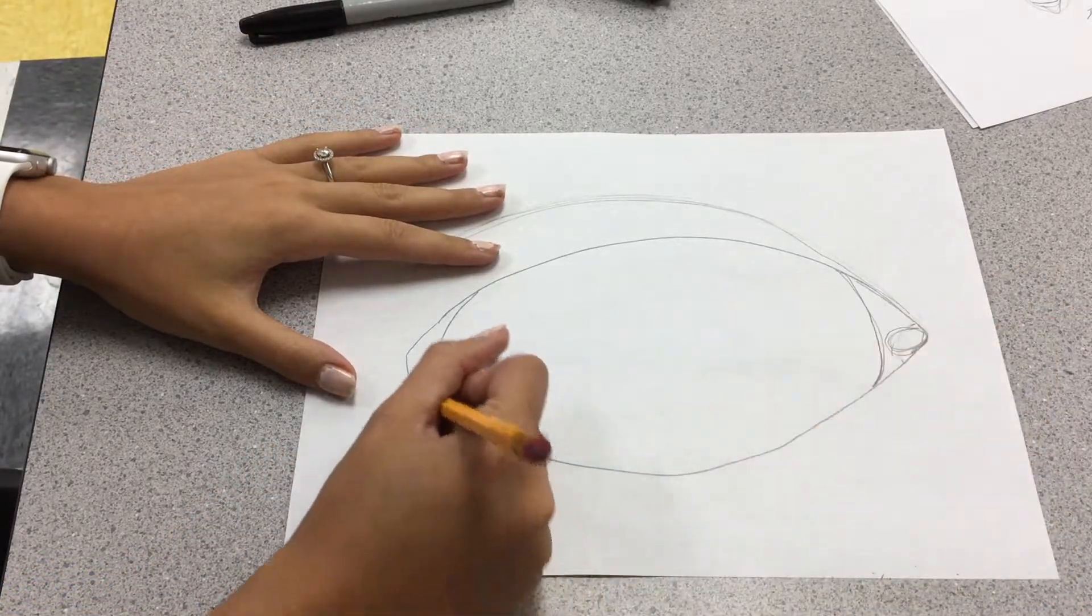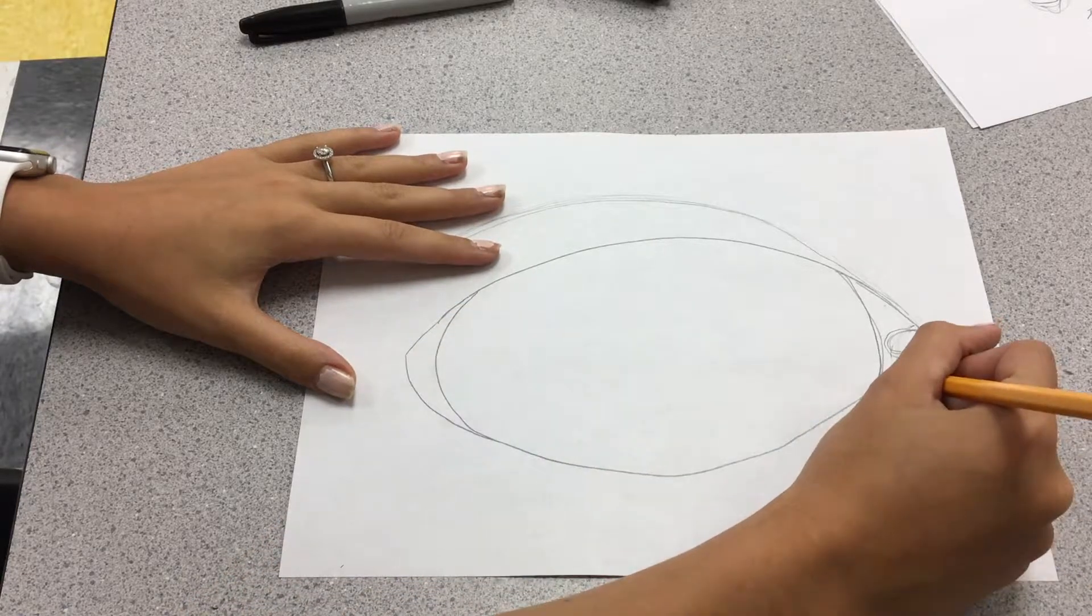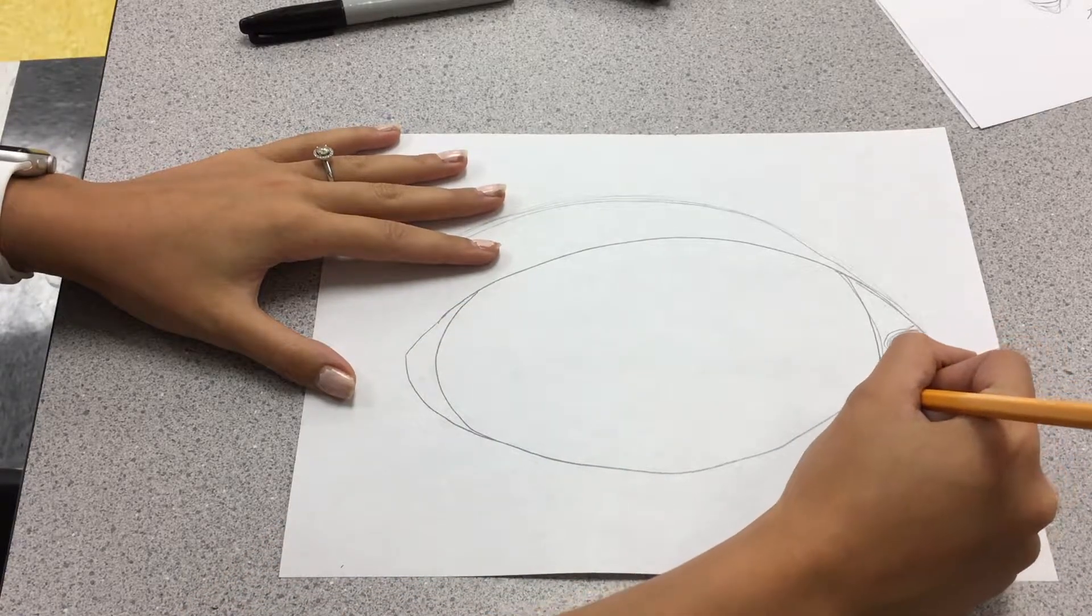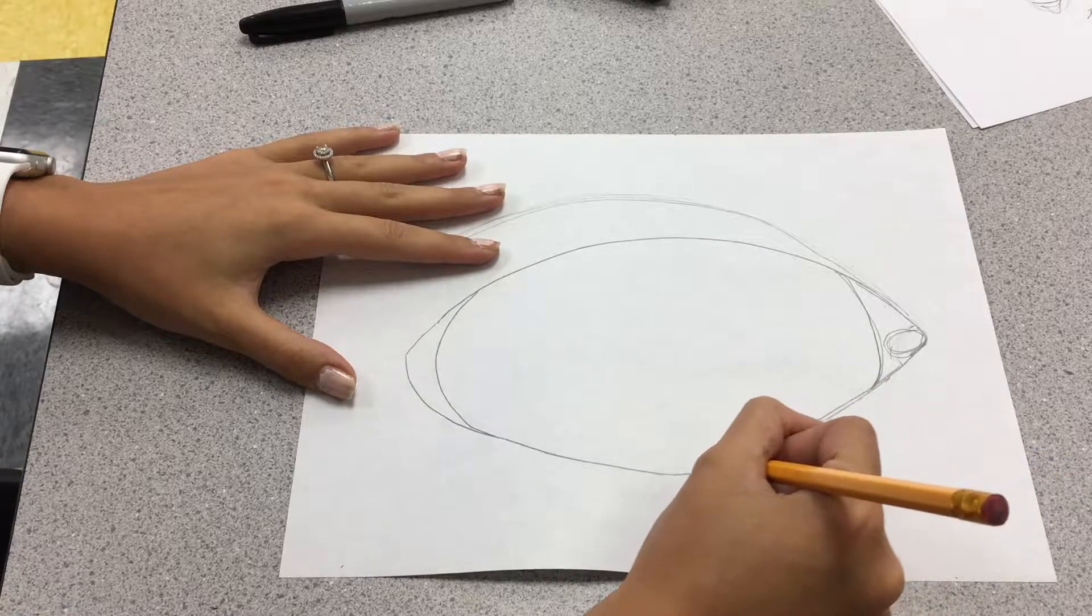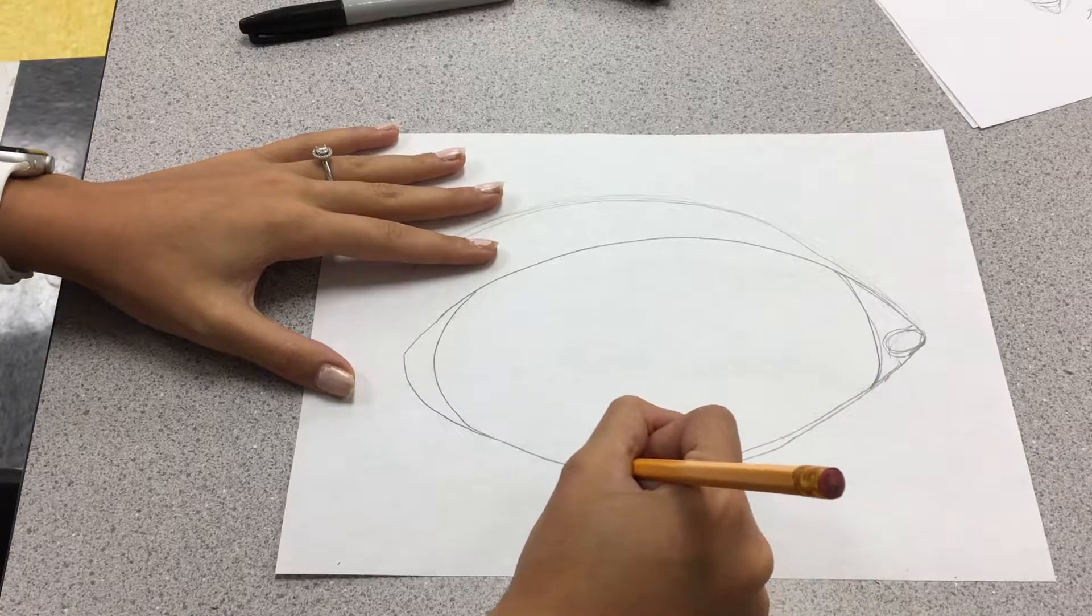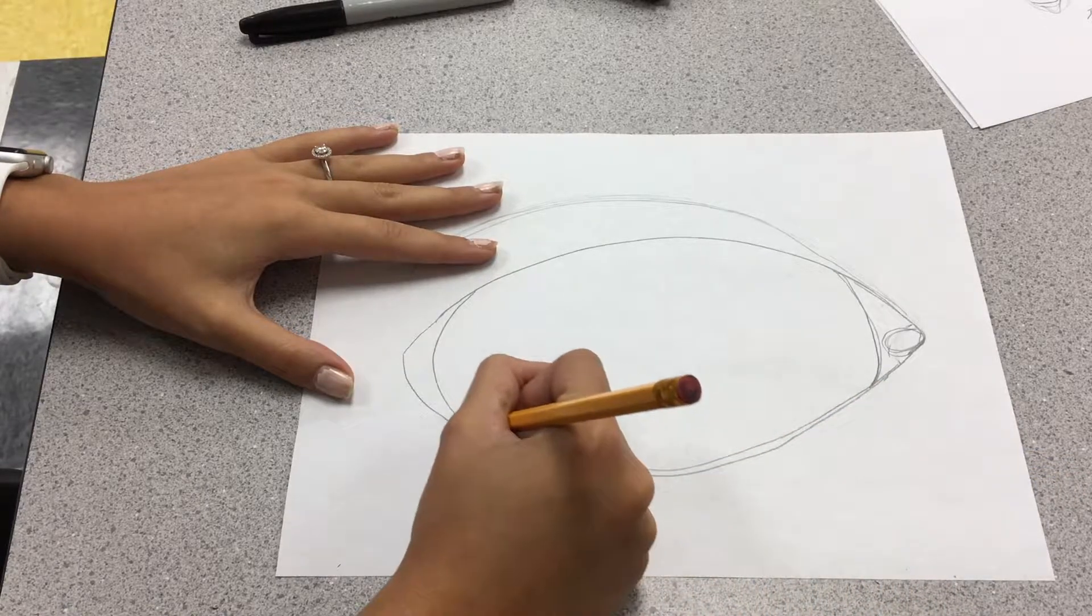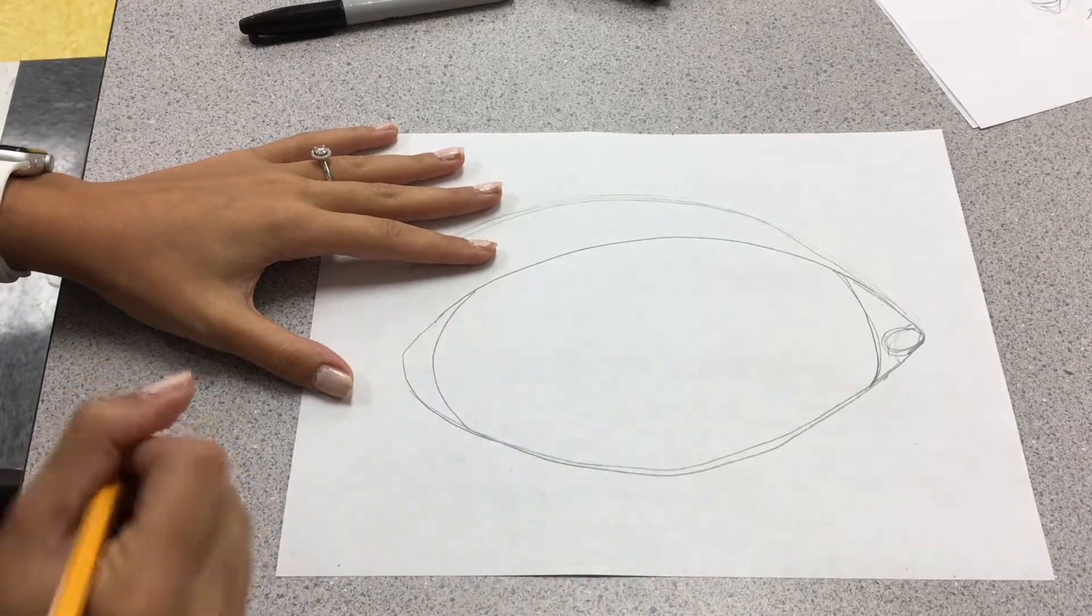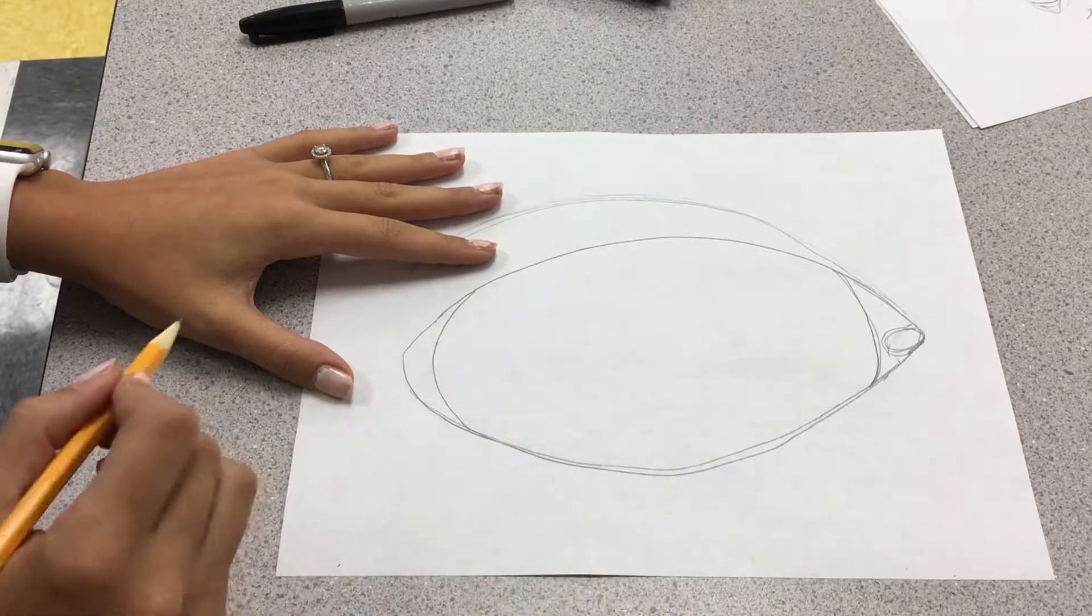Next, we're going to do our lash line, our bottom lash line. So again, I want you to draw a little line here. And that is actually the water line of your eye, so your bottom eyelid.